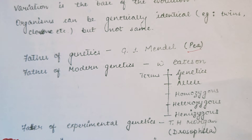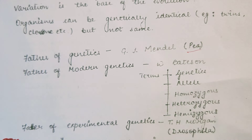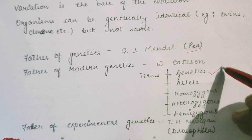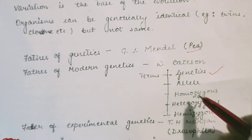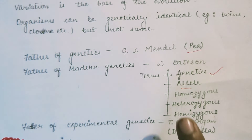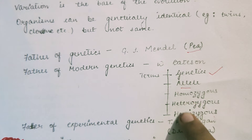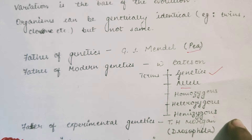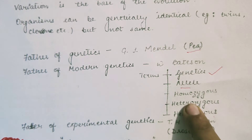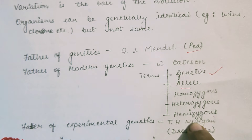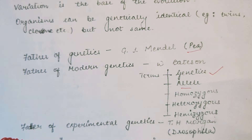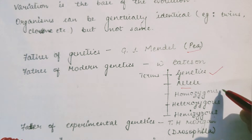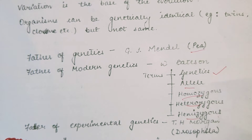The terms given in genetics include: the term 'genetics' itself, 'characters', and 'alleles'. Bateson also gave the terms: homozygous, heterozygous, and hemizygous. Homo means equal, hetero means different, and hemi means half. So according to all these concepts, Bateson has given these fundamental terms.